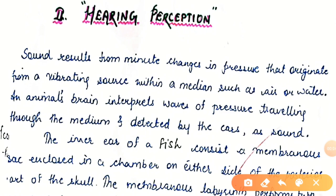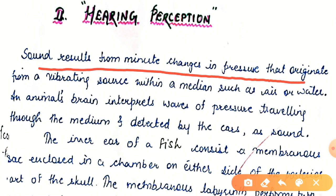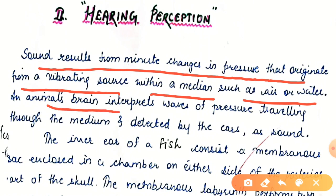Hearing perception is related to the auditory mechanism — ears and auditory perception. Sound results from minor changes in pressure that originate from a vibrating source within a medium such as air or water. Sound can only travel in a medium. After traveling through the medium, it is interpreted through our brain and we can react to things — an animal's brain interprets waves of pressure detected by the ears as sound.